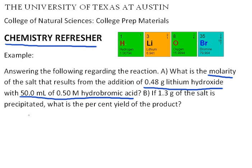So the first thing we need to do is write a balanced chemical reaction, and you should recognize that lithium hydroxide is a strong base and hydrobromic acid is a strong acid. These will react together completely to form water and our salt, lithium bromide. The next thing you want to do is make sure the reaction is balanced, and indeed it is, so we can move forward.